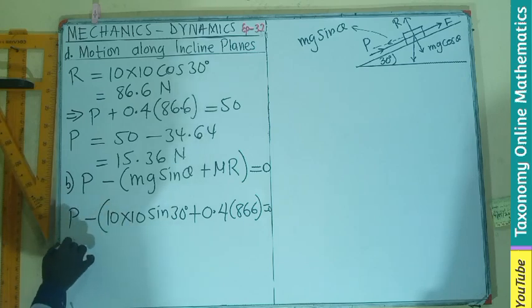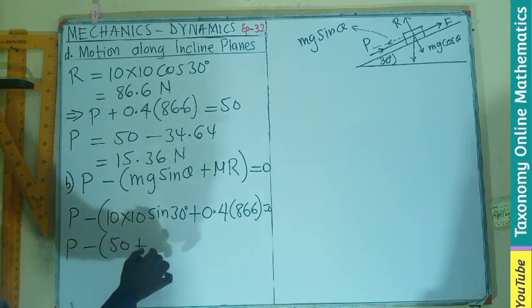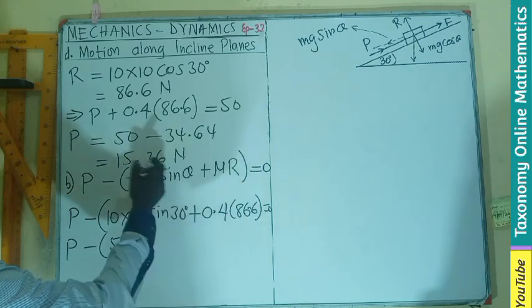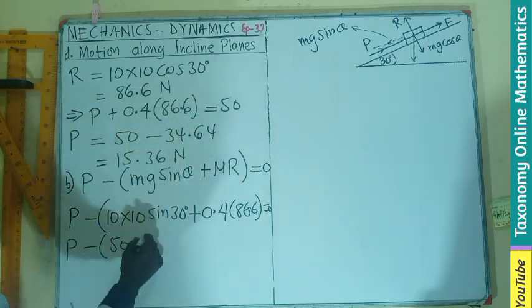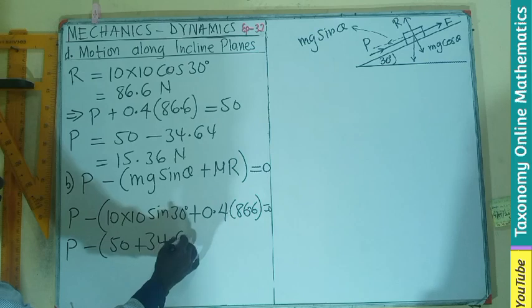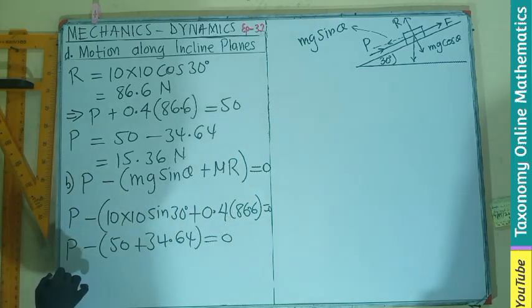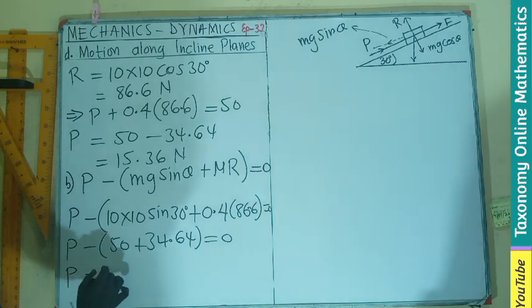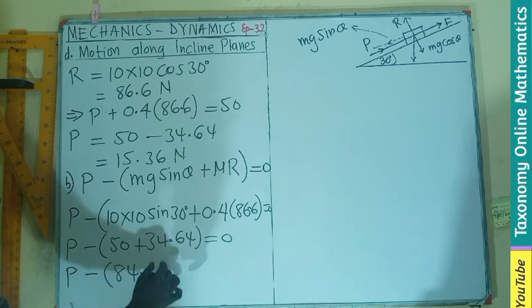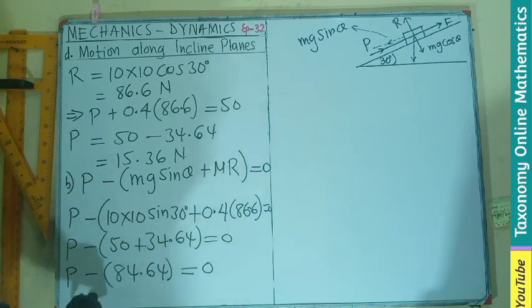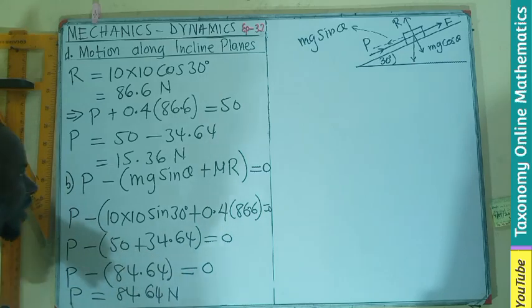We can now do our substitution. P minus 10 times 10 times the sine of 30 degrees plus 0.4 times 86.6 equals 0. P minus 50 plus 34.64 equals 0. So P minus 84.64 equals zero. Transpose that, your force becomes 84.64 newtons.